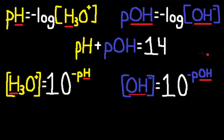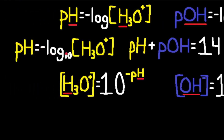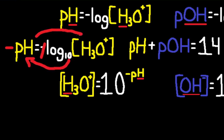Instead of memorizing the formulas for OH- and H3O+, it's easier to understand how logs work. pH is equal to the negative log base 10 of H3O+. Whenever you take the log of something and it doesn't give you the base, the base is assumed to be 10. So first, let's move the negative to the other side, so we have negative pH, which cancels out the negative. The base then takes the power of what the log is equal to, and that equals what we're taking the log of.